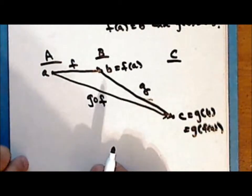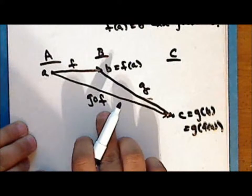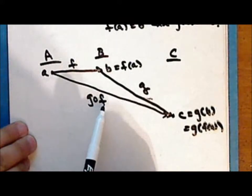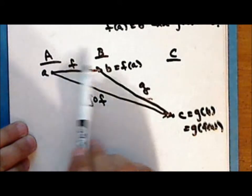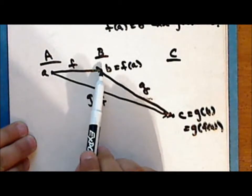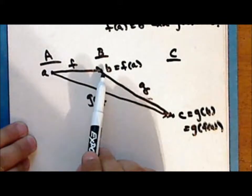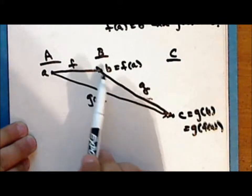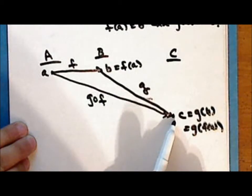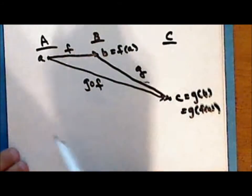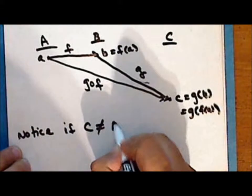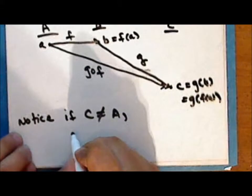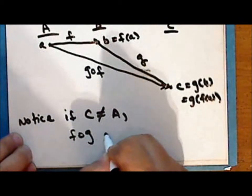Notice that the order in the notation matters. The composition g∘f means we first map an element from the domain of f into its codomain, and then map that element from the codomain of f — which is now the domain of g — into an element c in the set C. In particular, if the set C is not equal to the set A, then the composition f∘g is not defined.